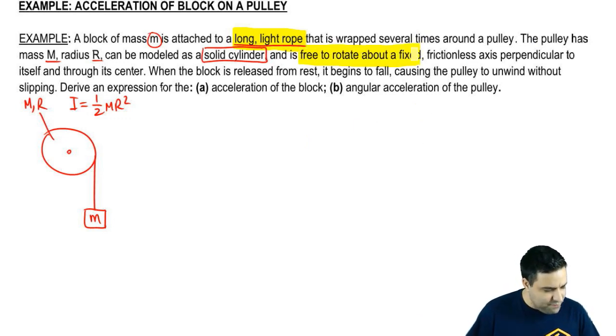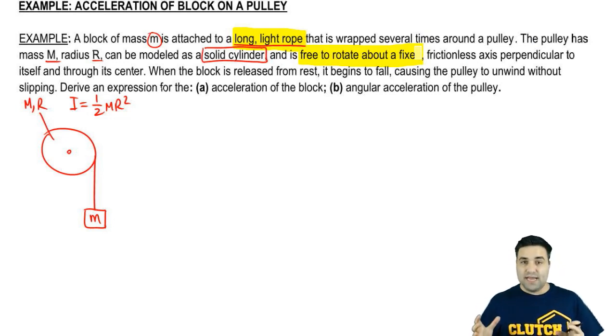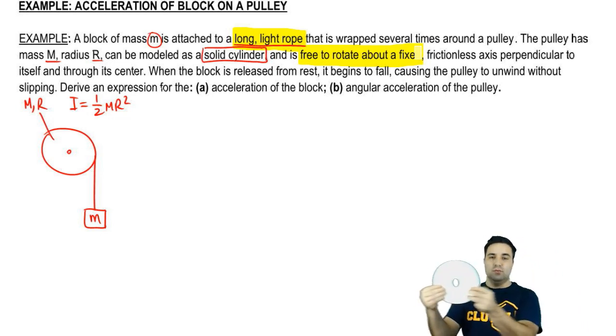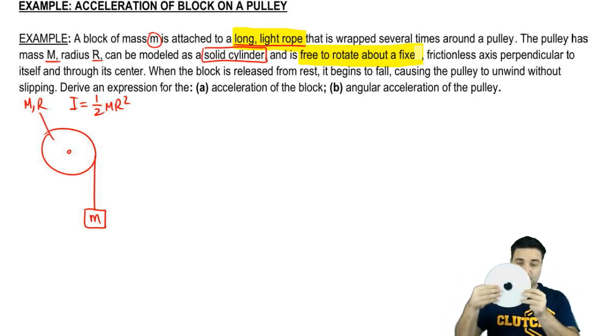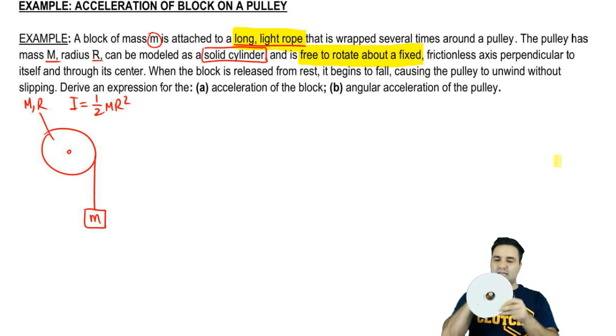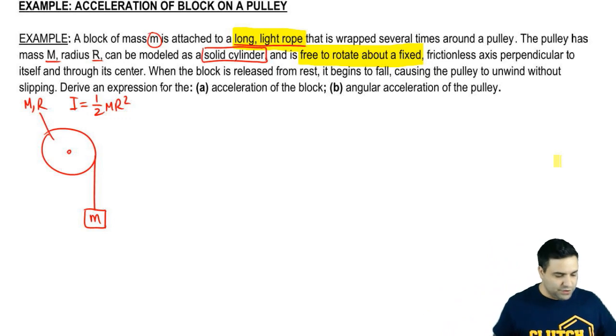Free to rotate about a fixed axis. Free to rotate means that the disc can rotate, but it's a fixed axis, which means that the axis isn't going to move sideways. It stays in place. So it spins, but it stays in place. Frictionless just means that there's no friction due to the axis here, no rotational friction.